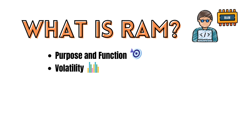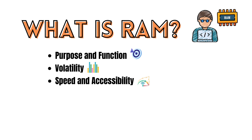RAM is volatile memory, which means that its contents are lost when the power is turned off or when the computer is restarted. This is in contrast to non-volatile storage, like hard drives, which retains data even when the power is off. RAM is much faster than long-term storage devices.